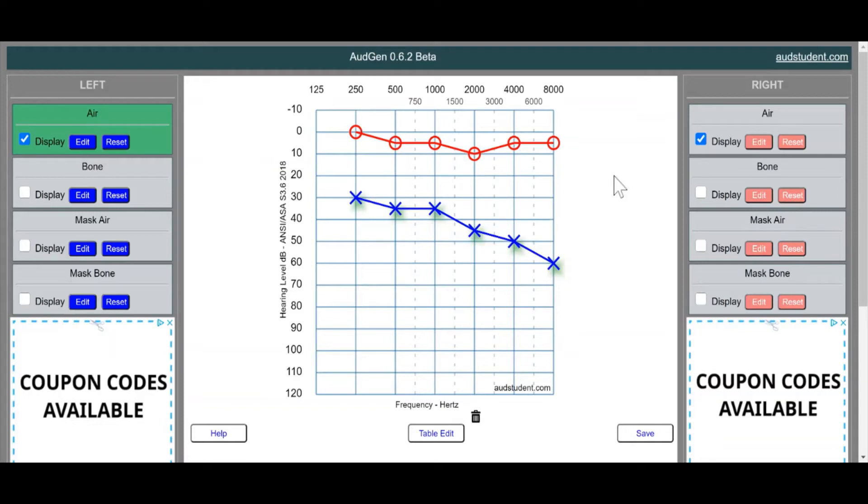Let's go back to our right ear real quick. Our right ear is normal. So we can assume that the bone conduction is pretty much going to mirror the air conduction. Again, so long as it's in normal ranges, it doesn't quite matter.